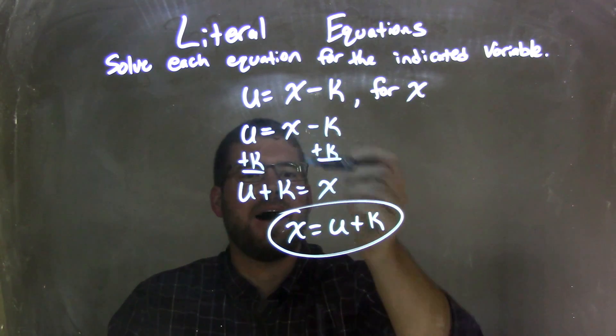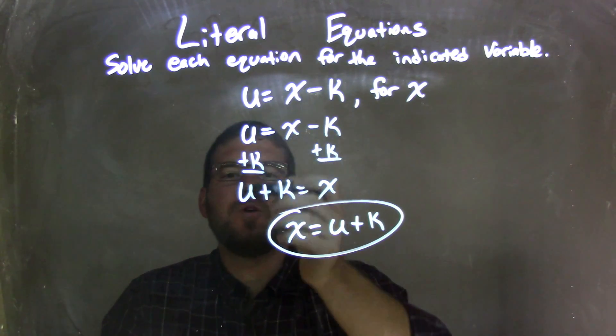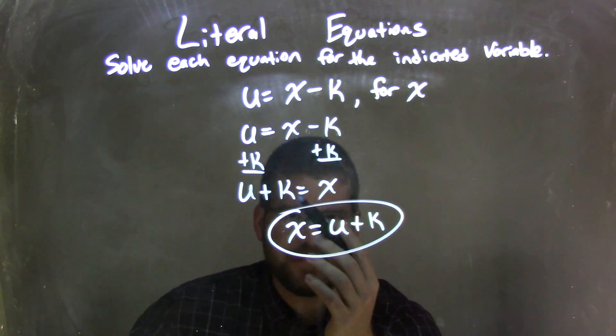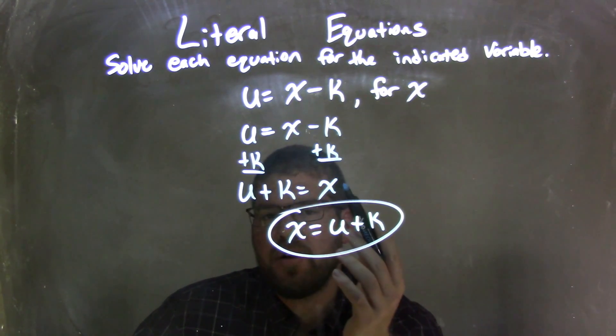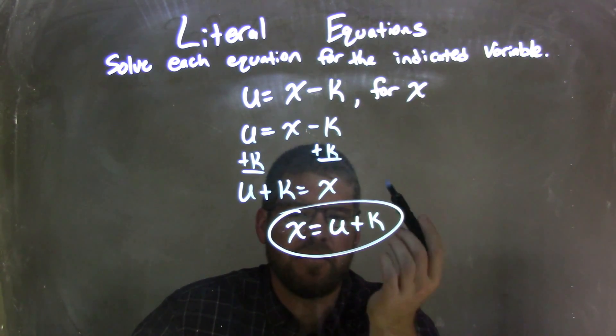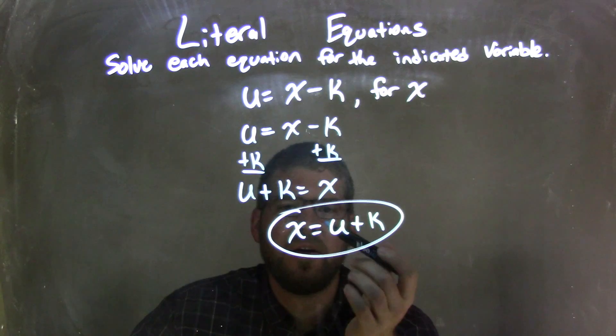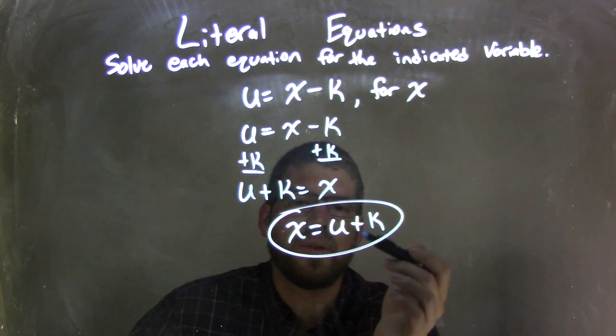That canceled the subtraction, isolated the x, and gave me u plus k on the left, away from the x. x is already isolated, so we're fantastic here. We can't simplify that. So I rewrote this with x first because that looks nicer, and my final answer is x equals u plus k.